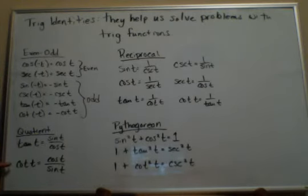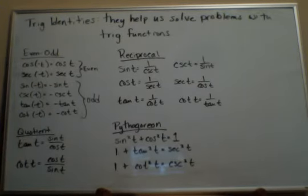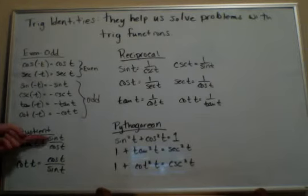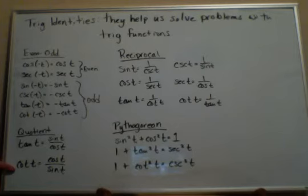The quotient properties should be fairly evident to you if we have tangent equals sine over cosine. Remember in the unit circle, we defined tangent as y over x and y was sine and x was cosine. So it makes sense that tangent then is also sine over cosine. And then of course we have cotangent, which would be cosine over sine or x over y.